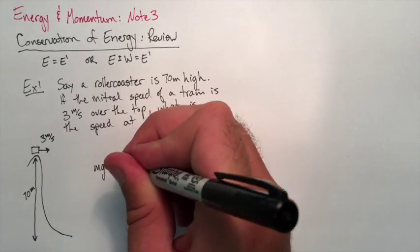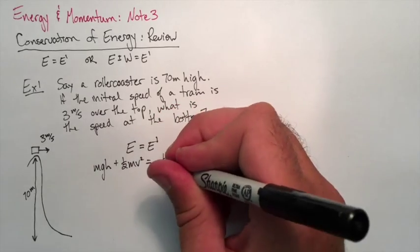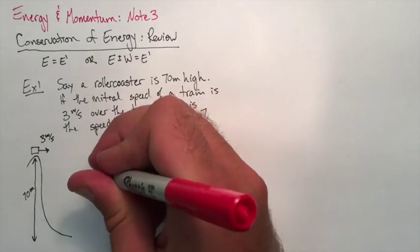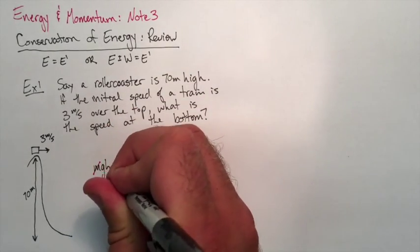So E equals E prime. At the top, all we have is gravitational potential and kinetic. And at the bottom, we're only going to have kinetic because our height will be zero. Masses will cancel.